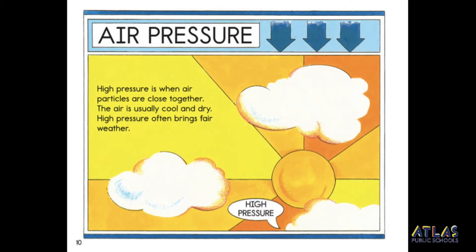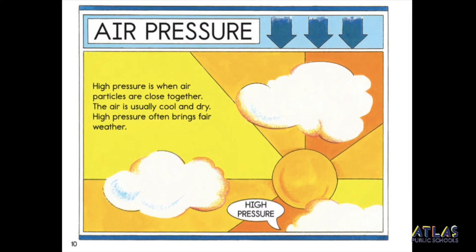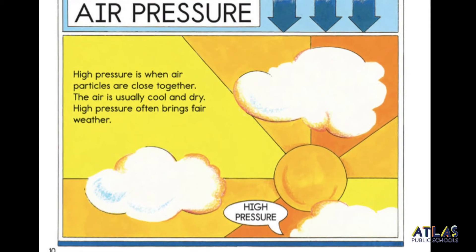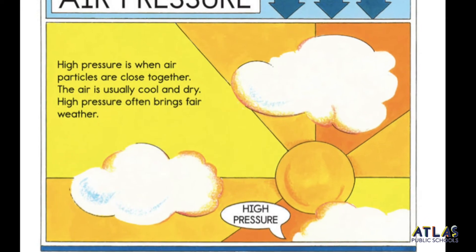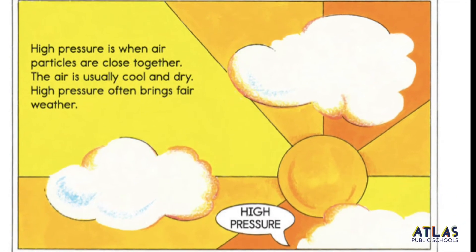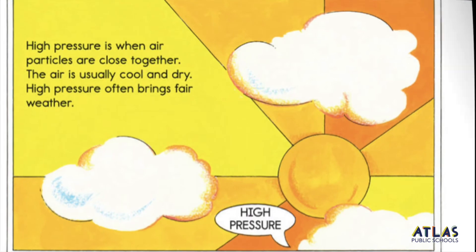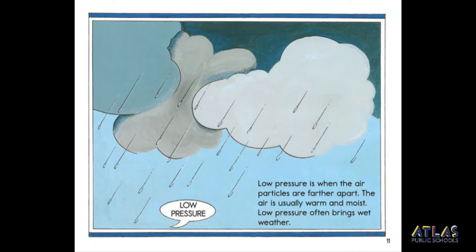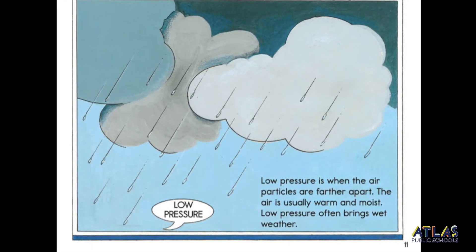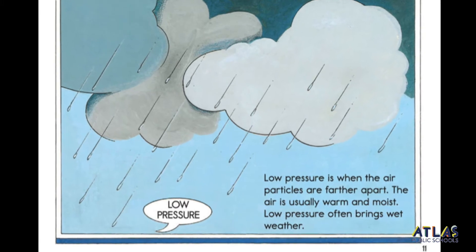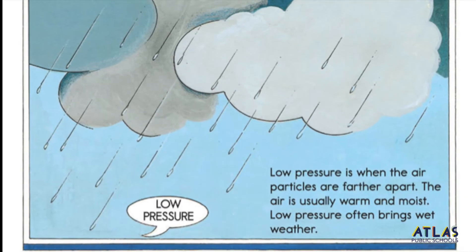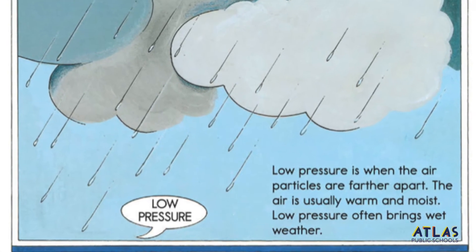Air pressure. High pressure is when air particles are close together. The air is usually cool and dry. High pressure often brings fair weather. Low pressure is when the air particles are farther apart. The air is usually warm and moist. Low pressure often brings wet weather.